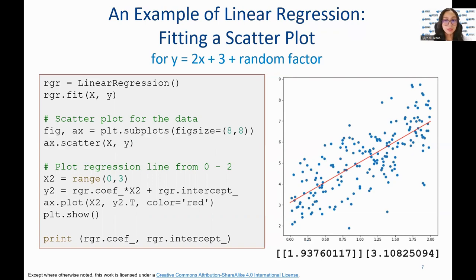The x2 variable represents a range of values from 0 to 3, and the regression line is plotted using the formula y2 equals RGR.coef_ times x2 plus RGR.intercept_, which gives the coefficients of the independent variables, i.e., the slopes of the regression line. The intercept_ gives the intercept of the regression line, also known as the y-intercept. The final line prints out the coefficients and the intercept of the regression line.